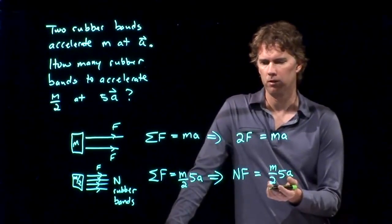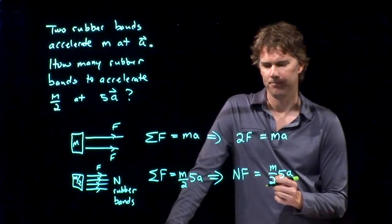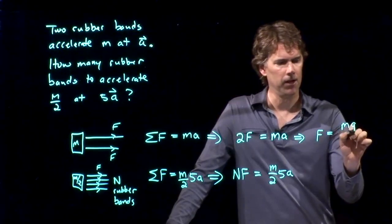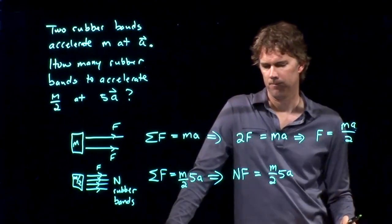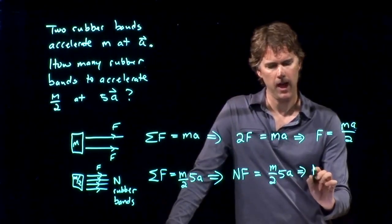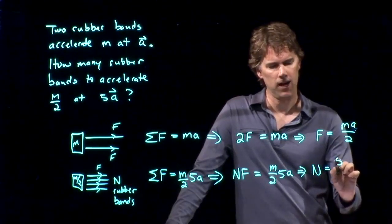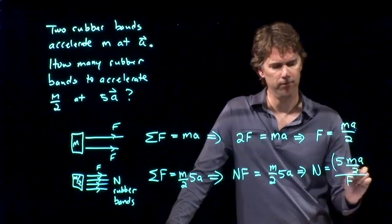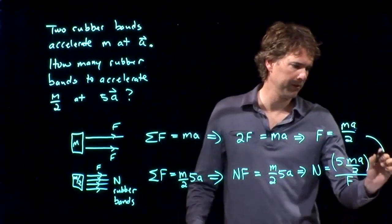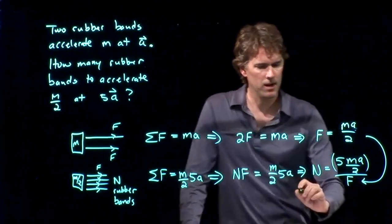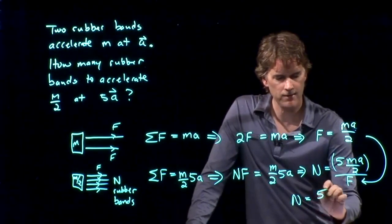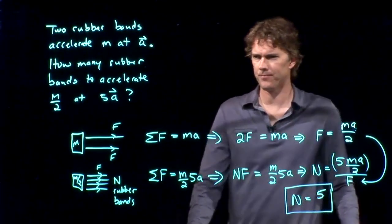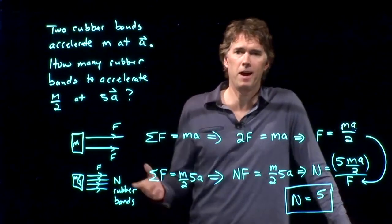And now we're trying to solve this thing for N. How can I do that? Well, it looks like this equation we can just solve for F. F is MA over two. And now this equation, I can solve it for N. N is 5 MA over two, all of that over F. And now look what happens. I can stick that F right in there. And I get N is equal to 5. The MA over two from there cancels with the MA over two from there. And I just get N equals 5. How many rubber bands are needed? Five rubber bands are needed.